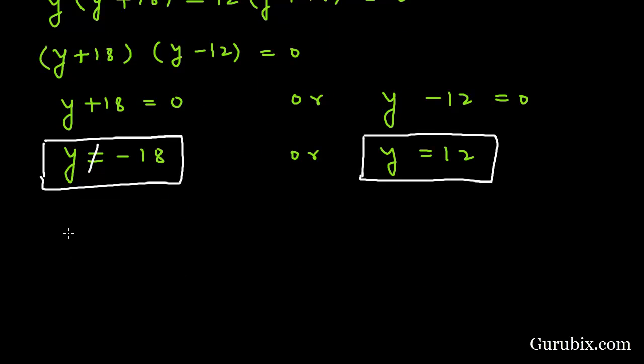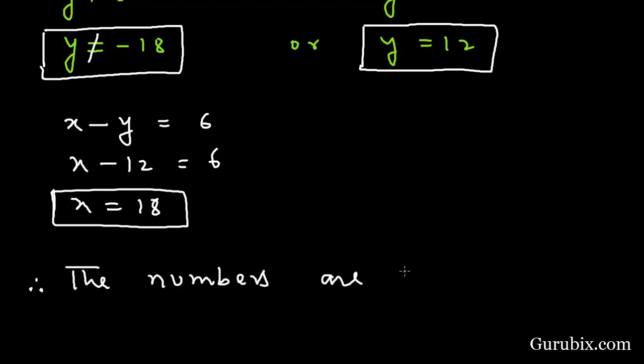Now we can find the value of x by the equation x minus y equals 6. Here we have x minus 12 equals 6. This means x is equal to 18. Therefore the numbers are 18 and 12. This is the solution of the question.